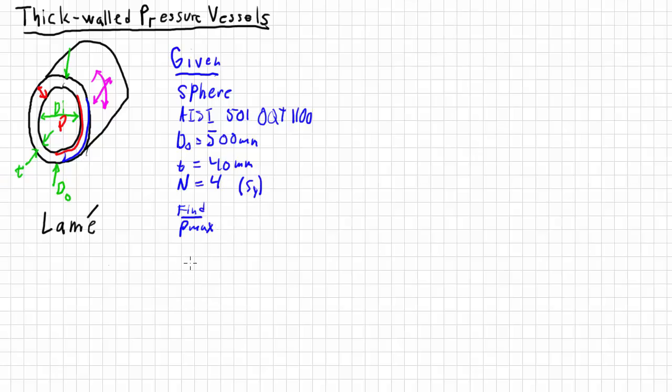The first thing I want to do is see if we can get by with the thin equations, because they're a lot easier. I'm going to check on that. For this to be thin, I need the wall thickness to be less than the inner diameter divided by 20. The wall thickness is defined as 40 millimeters.